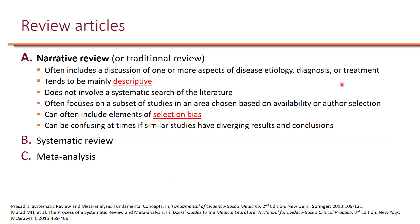Generally speaking, there are three types of reviews: narrative reviews, systematic reviews, and meta-analyses. In narrative reviews, which are sometimes called traditional reviews, the authors basically have a descriptive discussion of one or more aspects of disease etiology, diagnosis, or treatment.